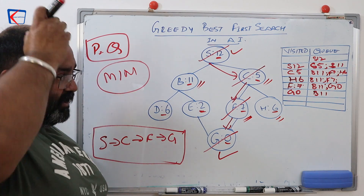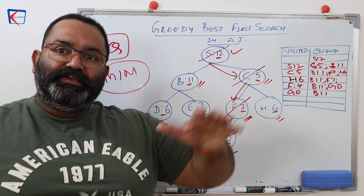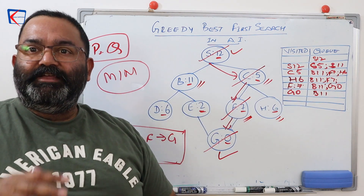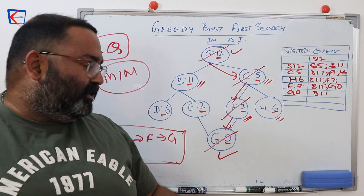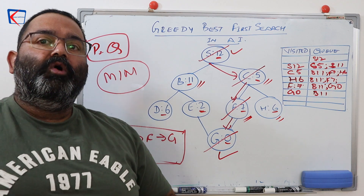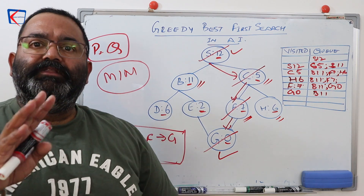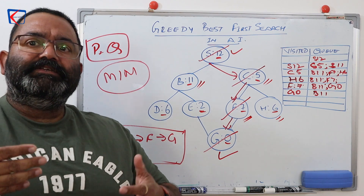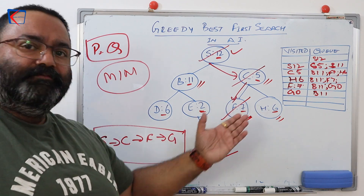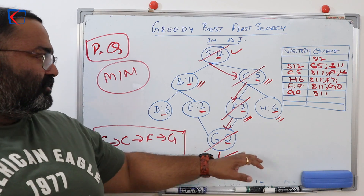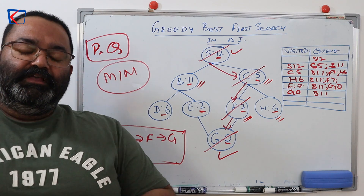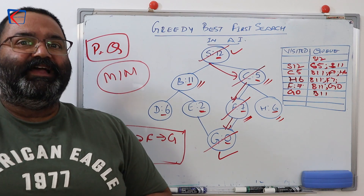So that is Greedy Best First Search. We use minimum priority queues, check whether a node is the goal, expand if not, and push children into the queue — repeating until we reach our goal. One very important thing: even though we use heuristics, Greedy Best First Search does not guarantee the shortest path. The heuristic improves efficiency so we don't visit every node, but the path found may not always be the shortest.